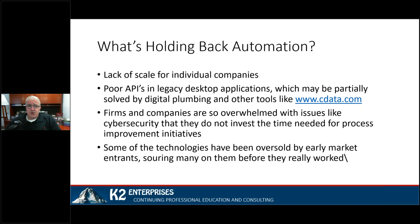One of the things that's really held us back — for individual companies in particular — is a lack of scale. Historically, tools like artificial intelligence and robotic process automation have been limited to enterprise companies with north of a billion in revenue and 2,500-plus employees. However, automation is getting better, and cloud applications can now be linked together with tools like Zapier and CData. We've also had a lot of technology oversold by early market entrants, so people got soured on them before they actually worked.